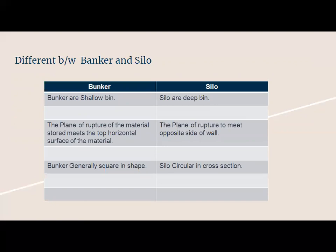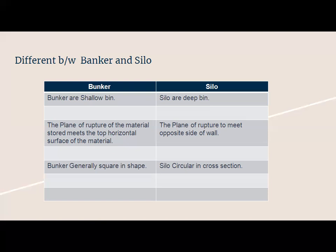The next topic is the difference between Bunker and Silo, which is very important and 100% expected in the RGPV exam. Bunkers are shallow and wide BINs, while Silos are deep BINs — the width of a bunker is more, while the depth of a silo is more. In a bunker, the plane of rupture of the stored material meets the top surface of the material, while in a silo, the plane of rupture meets the opposite side wall. Bunkers are generally square or rectangular in shape, while silos are circular. You can show this difference by drawing diagrams of both.